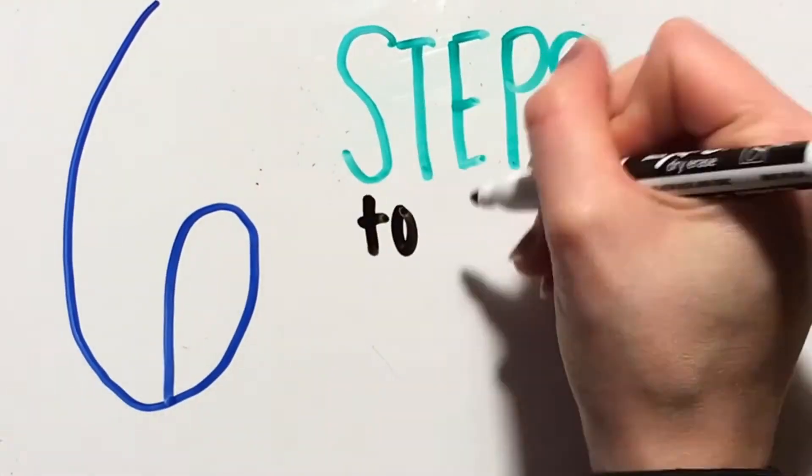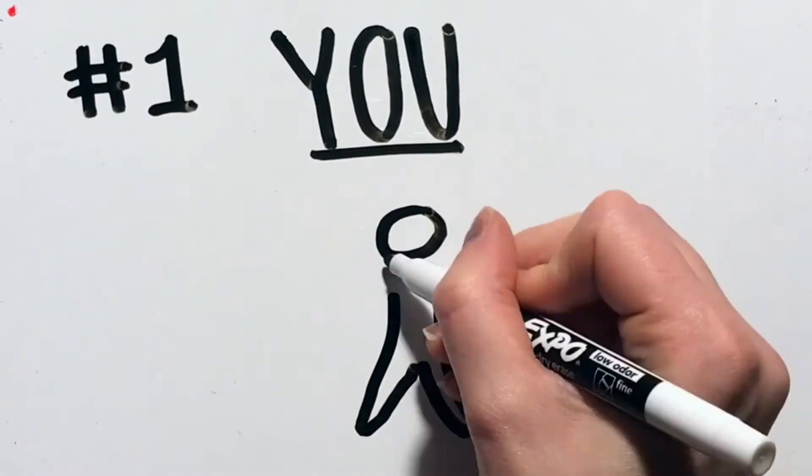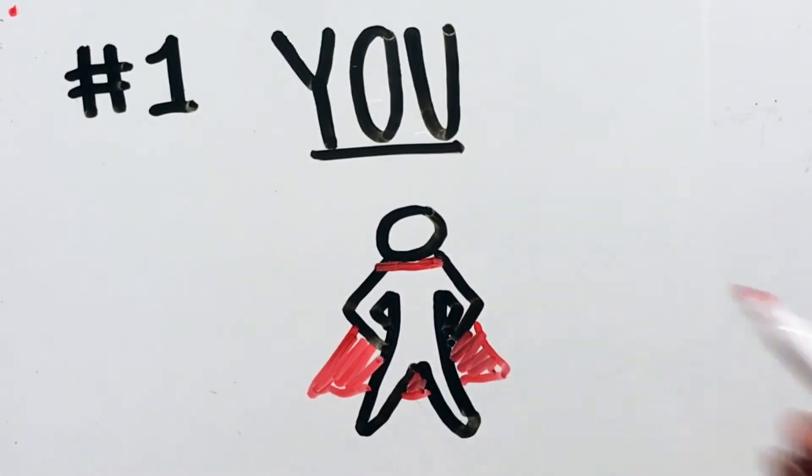There are six steps to shaping a school's culture. First, you need to start with you as an individual. You should be a role model and leader for others.